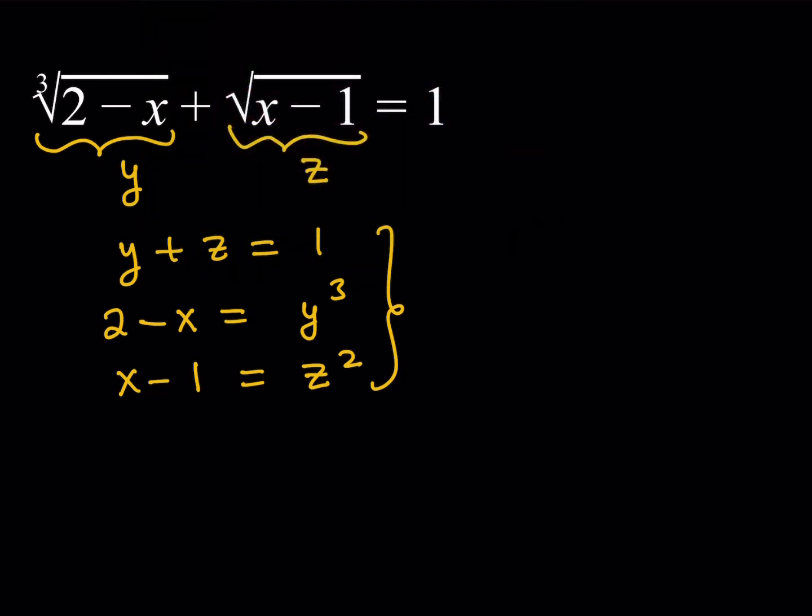One thing that I can do from here is, obviously, I can isolate the y and write it as 1 minus z. So I can do that. And then here, I can write x in terms of y, or I can write x in terms of z. So I can say x can be written as z squared plus 1.